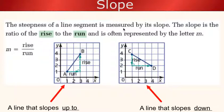The steepness of a line segment is measured by its slope. The slope is the ratio, like we saw today, the rise to the run, and we will often represent it by the letter M. So M, which is slope, is rise divided by the run.